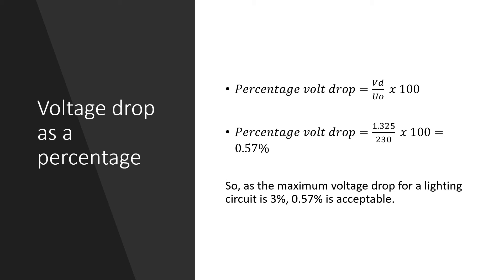So if the actual volt drop is 1.325 volts, we can convert this to a percentage by dividing by the voltage and then multiplying by 100. So if we take 1.325 and divide by 230 and then multiply by 100, that gives us a percentage of 0.57. So as the maximum voltage drop for a lighting circuit is 3%, 0.57% is acceptable.